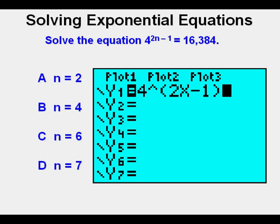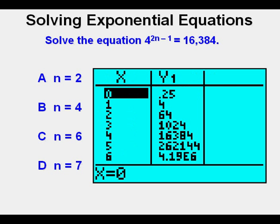And finally we can go to the y equals and just enter the 4 to the power of quantity 2x minus 1. Then onto the table view by pressing 2nd then graph. We can see that when x is 4, 4 to the power of quantity 2x minus 1 equals 16,384. Again showing that B is the correct answer. I hope you have an idea of which method you might prefer.